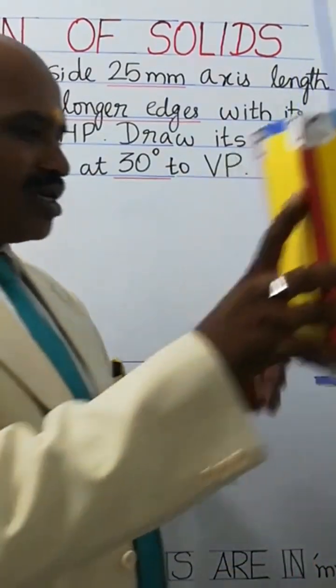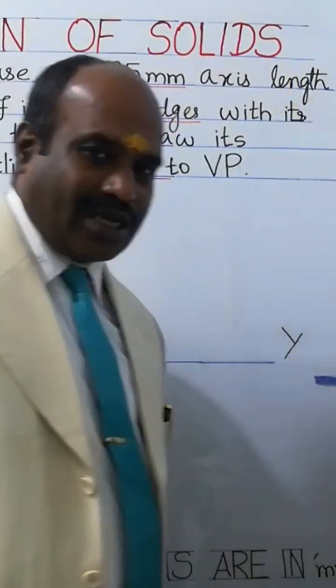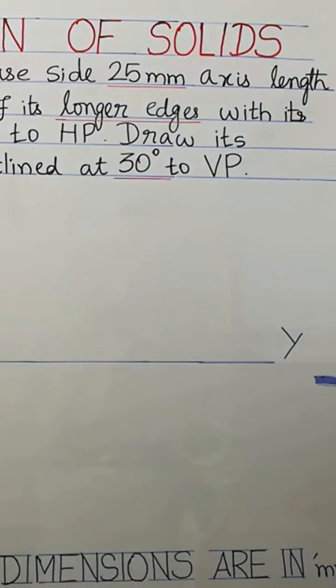So now go through what is the condition given in the question about the square prism. Read the question. Square prism of base side 25 mm and axis length. Axis length, you can see in the picture.